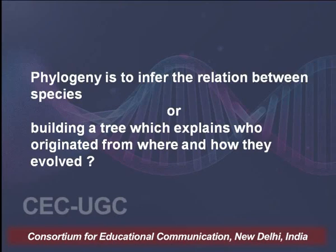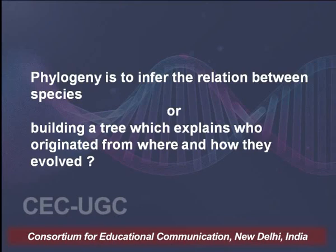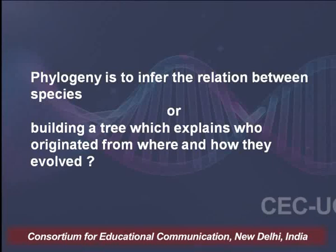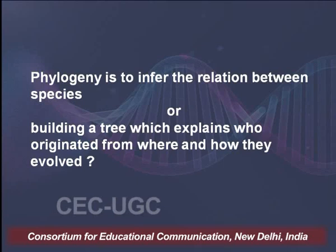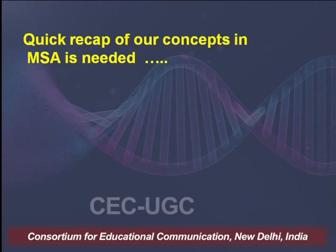Before I begin revising what we learnt already, it makes sense to tell you what phylogeny is and what we will learn in phylogenetic analysis. Phylogeny is to infer the relation between species, or to build a tree which explains who originated from where and how they evolved. We try to build a tree which depicts the relation — the present-day relation and its origin and evolution as well. We need to quickly recall what we have already learnt so that we can apply that in building phylogenetic trees.